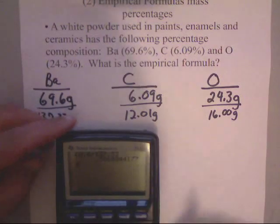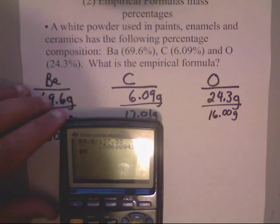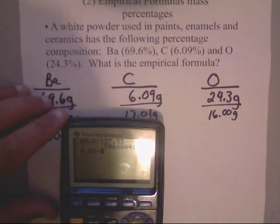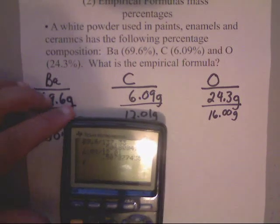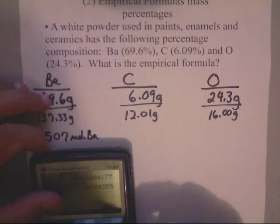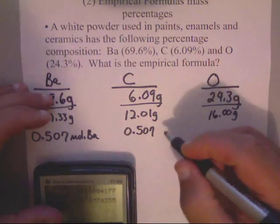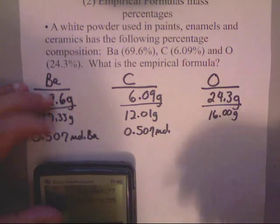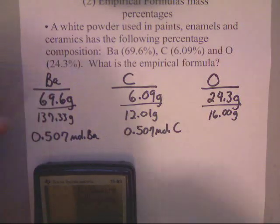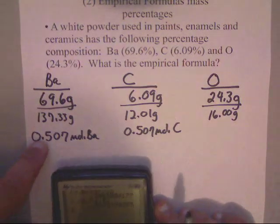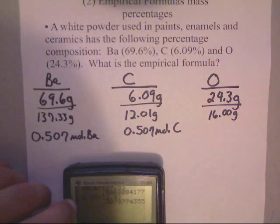All right, now carbon, you divide it, we've got 6.09 divided by 12.01, three sig figs, it looks like it's going to be 0.507 moles of carbon. Hey, these two match. What a quinky dink.